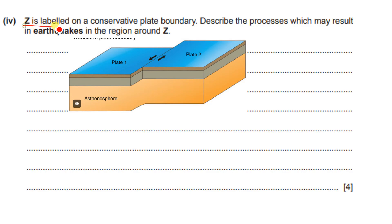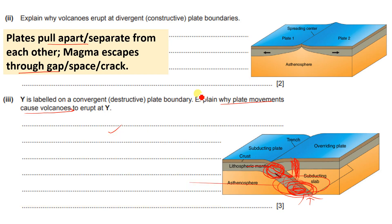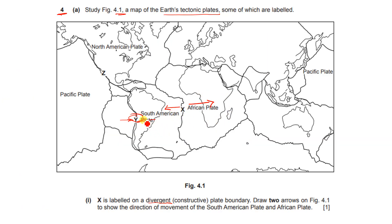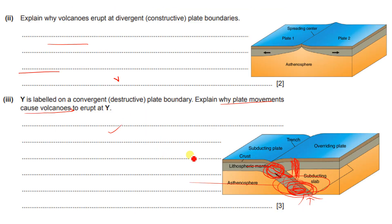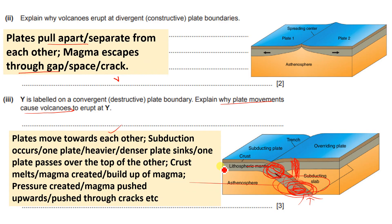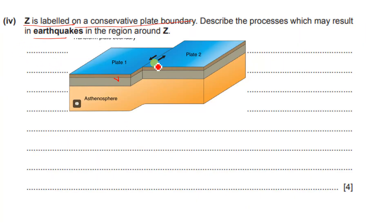Z is labeled on a conservative plate boundary. Describe the process which may result in an earthquake in the region around Z. In a conservative plate boundary, the two plates are moving parallel to each other — side by side. Because of that, they get locked up, which leads to friction, and the friction leads to a build-up of pressure. Any sudden movement can lead to the release of seismic waves, causing an earthquake.